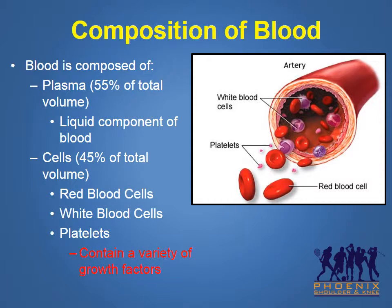Normal blood includes both plasma and cells. Plasma, which comprises approximately 55% of the volume of blood, is the liquid component of blood and contains water and electrolytes. Cells comprise the other 45% of the volume of normal blood. The cells in blood include red blood cells, which are known for transporting oxygen, white blood cells which help fight infection, and platelets which assist in the clotting process if bleeding occurs.